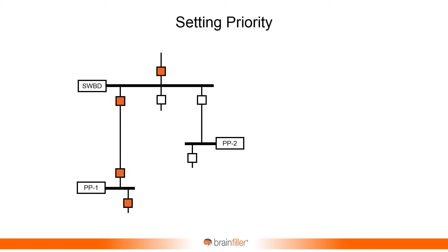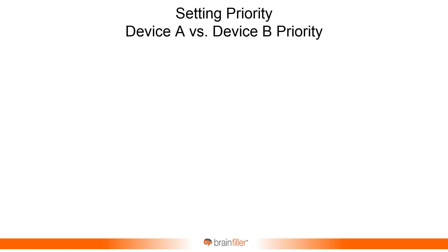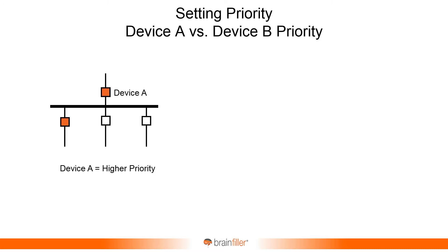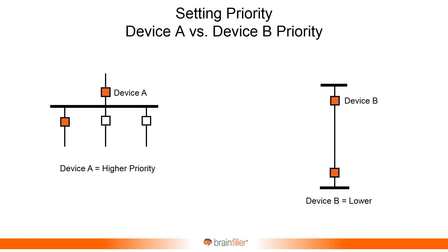So how do you determine the priorities of devices? Let's say we have four devices in series: a main, a feeder, another main, and another feeder. You have to look at priority in terms of what I define as an A priority and a B priority. A is the highest priority — it means you have a device such as a main feeding multiple feeders. If that main trips, you lose more than one circuit, resulting in a wider outage.